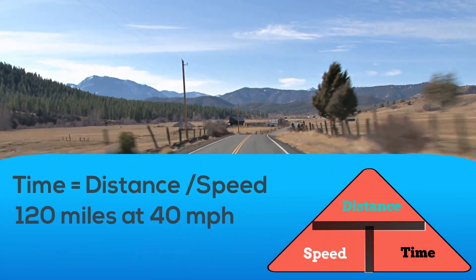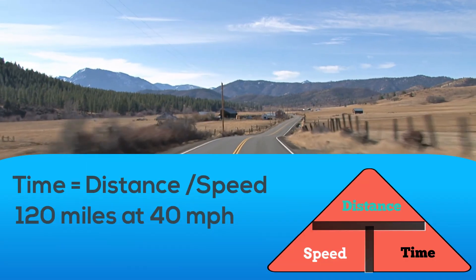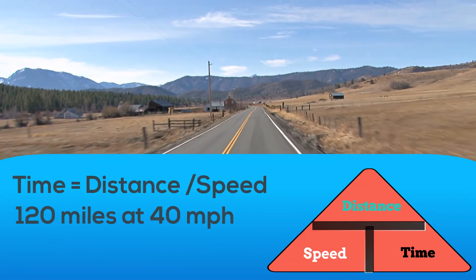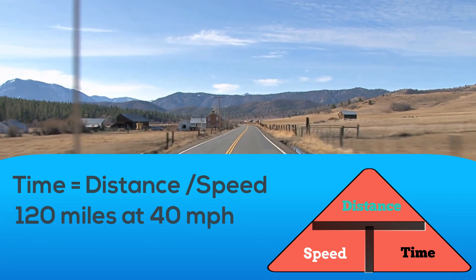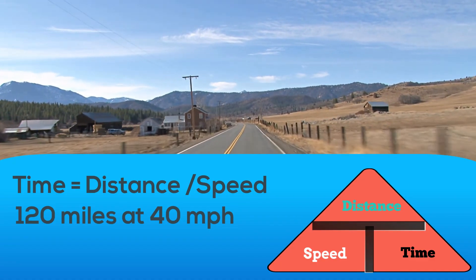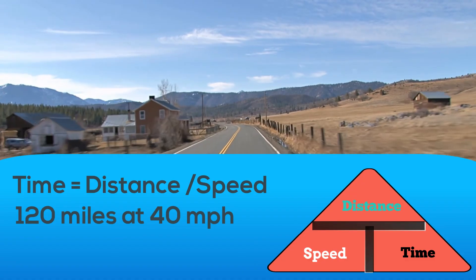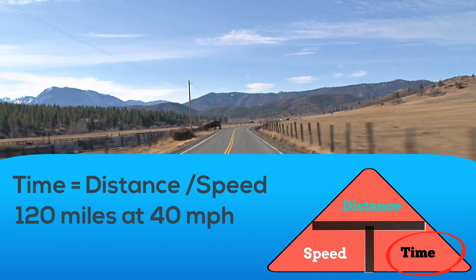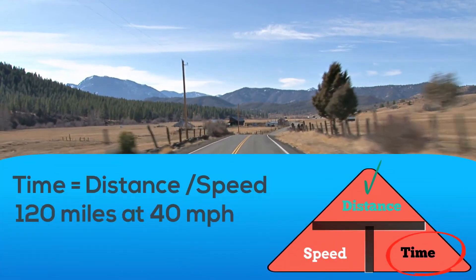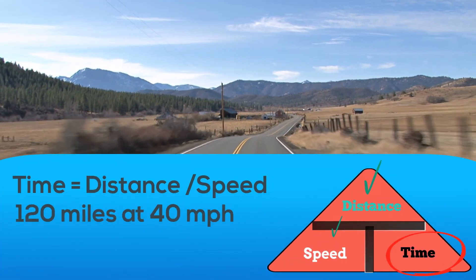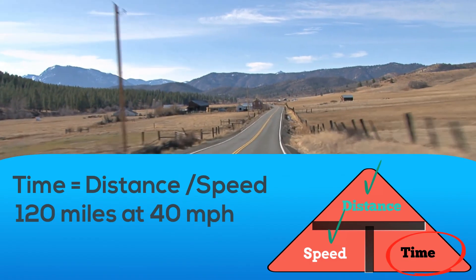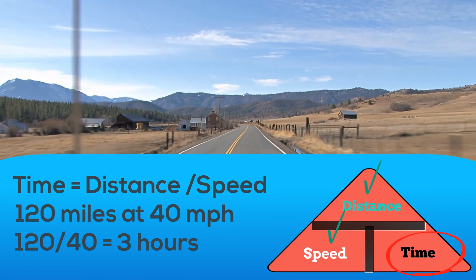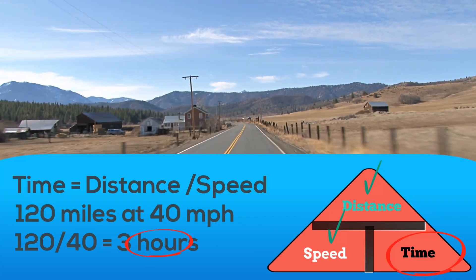Finally, you are traveling on this road and you need to reach a destination 120 miles away. If you can travel at 40 miles an hour, how long will it take? I circle time because that's what I need. My distance is 120 miles and my speed is 40 miles per hour. So I will merely divide 120 by 40, and that equals 3 hours.